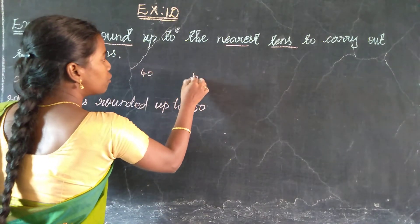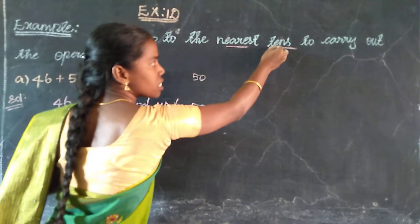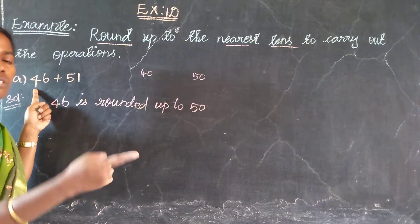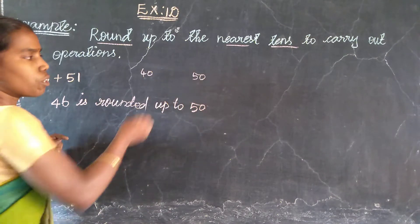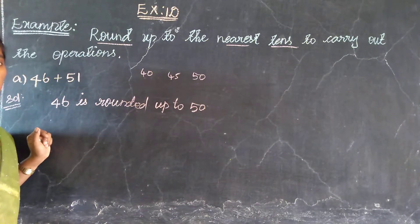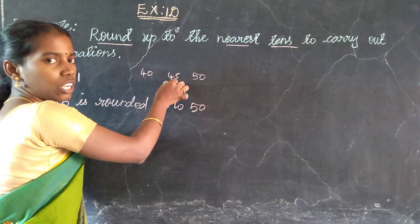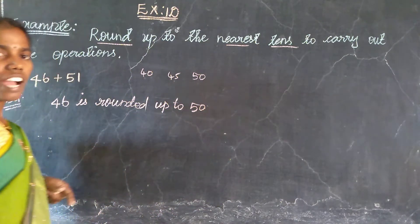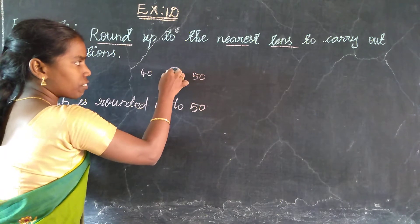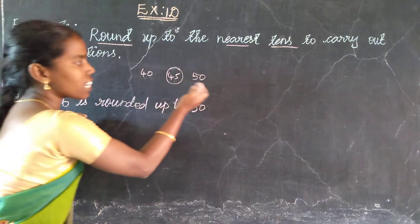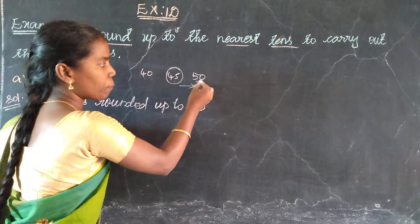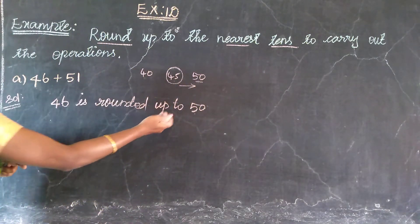So between 40 and 50, the exact center value is 45. We check whether 46 is to the right or left of center. Since 46 is greater than 45, it is on the back side, so we round up. 46 is rounded up to 50.